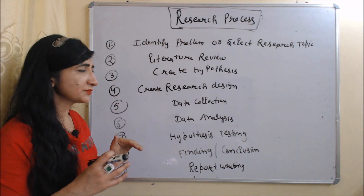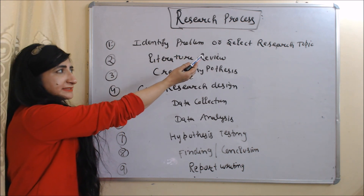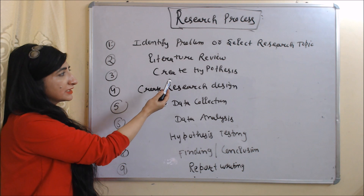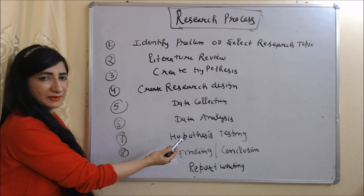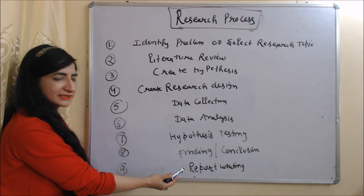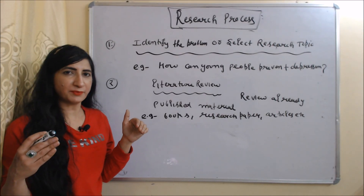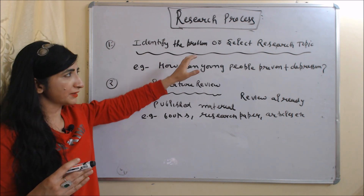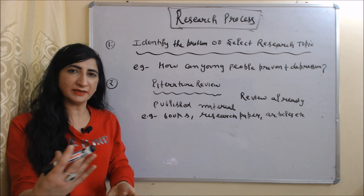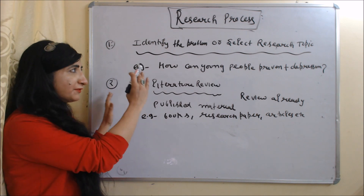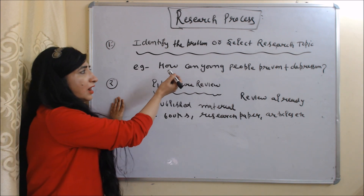Now we are going to talk about the research process. The research process includes many steps: identify the problem or select a research topic, literature review, create hypothesis, create research design, data collection, data analysis, hypothesis testing, finding and conclusion, and last is report writing. The first step of the research process is to identify the problem or select the research topic. Since we do research for solving any problem, we first identify the problem. For example, our research topic is how young people can prevent depression.